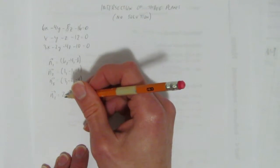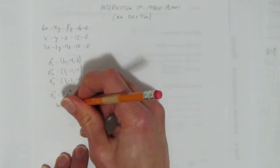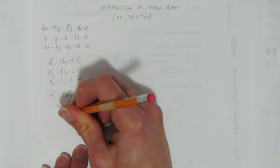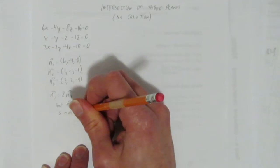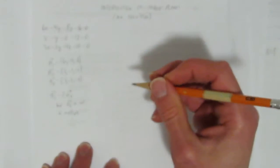But notice that the other equation is not a multiple of that. So let's write that down as, but n2 is not a multiple. So what that means is we've got, it would help maybe to have a sketch.